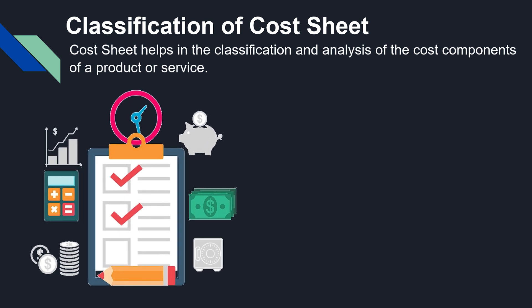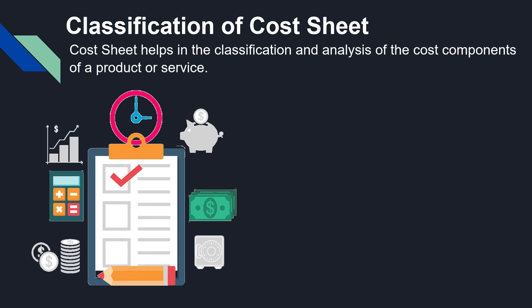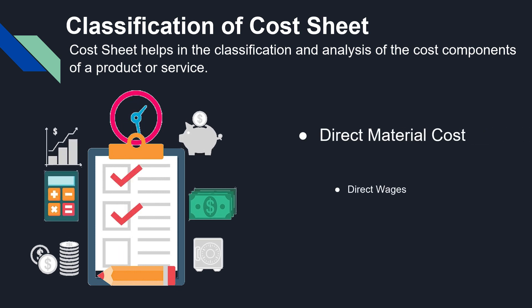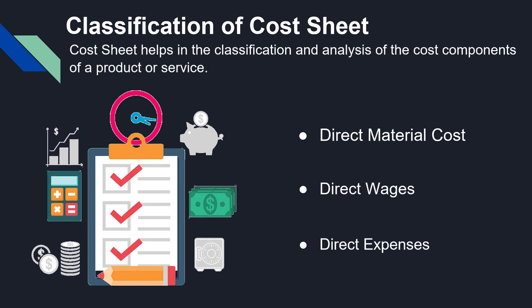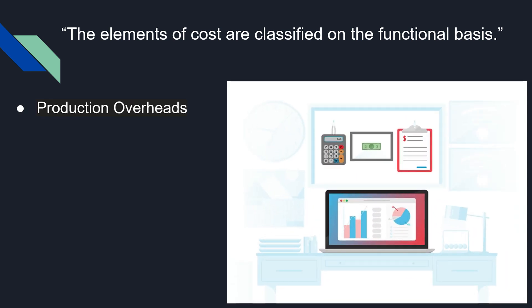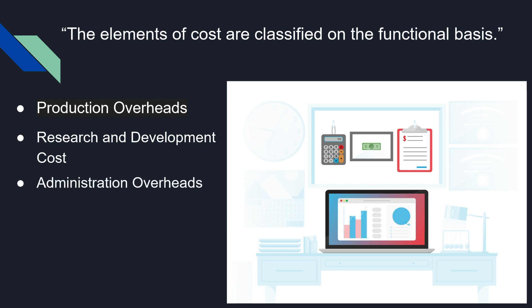A cost sheet helps in the classification and analysis of the cost components of a product or a service. The elements of cost classified on a functional basis include Direct material costs, Direct wages, Direct expenses, Production overheads, Research and development costs, Administration overheads, and Selling and distribution overheads.